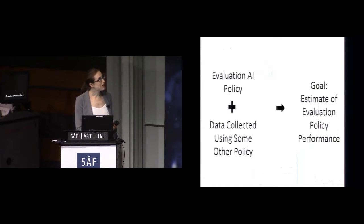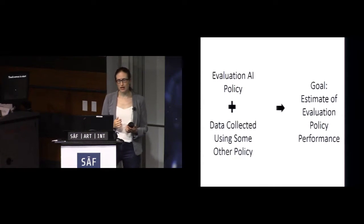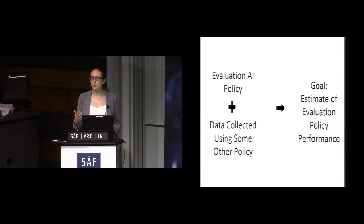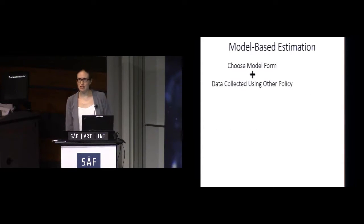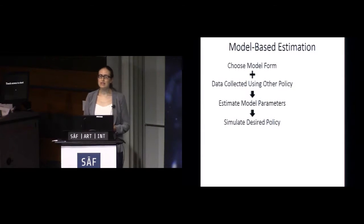What we'd really like to be able to do is have some policy and some data collected from some other policy, and yet still be able to get good, in some formal way, estimates of how well this policy would be before actually deploying it. One way you could think about doing this is to build a model. This is my rough characterization of how that would work. We'd choose a model form, we'd take the data that was collected using some other policy, we'd use it to estimate the model parameters, and then we could simulate our desired policy. Just to be clear here, a model form in this case is perhaps some parametric model or non-parametric model. It could be a Gaussian process, it could be a deep neural net. It is some sort of structural form of a model. Then it's a model that needs to be trained with data. So it has some parameters that describe how the model works, and that's what we can use our data to estimate. Then we can simulate any policy we like.